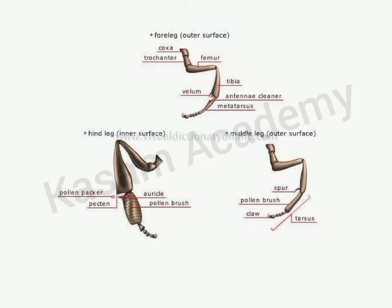The pollen brush is a bristle-like structure present on the basitarsus of the foreleg. The middle legs or mesothoracic legs consist of two important structures: pollen brush and tibial spur. The pollen brush is formed by stiff hairs on the basitarsus and collects pollen from the middle part of the body. The tibial spur is a movable spur present at the distal end of the tibia of the middle legs.